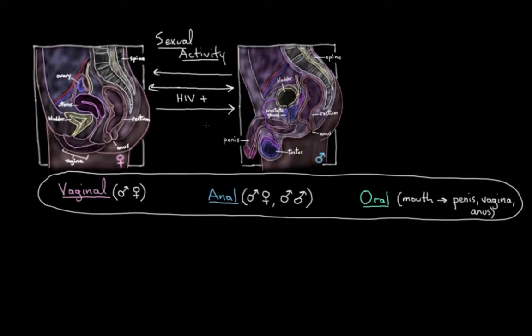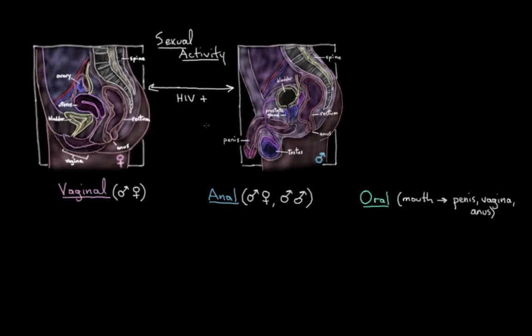So strategies to reduce or prevent HIV transmission in these scenarios - you could totally avoid all of these activities, abstinence from sex, but whether or not that's something you're willing to do is really up to you. But abstinence is really the only way you can be sure that you won't get an infection. Let's make a nice little list up here of ways to reduce or prevent HIV infection. So, abstinence.